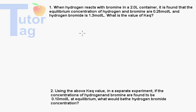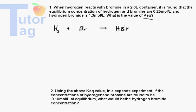Welcome to Tudor Tags video tutorial on equilibrium using the Keq value or the equilibrium constant. Last lesson, we learned how to write a reaction and how to write the Keq or equilibrium expression, also called the equilibrium law. We have the same reaction as last video: hydrogen plus bromine gives us hydrogen bromide. If this reaction is at equilibrium, this expression can show whether the reaction is product favored or reactant favored.